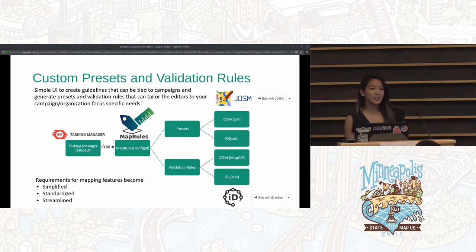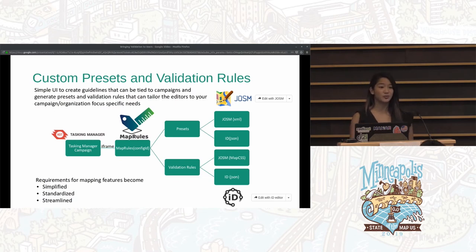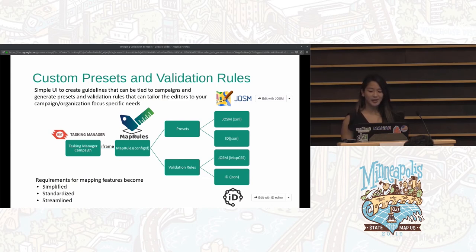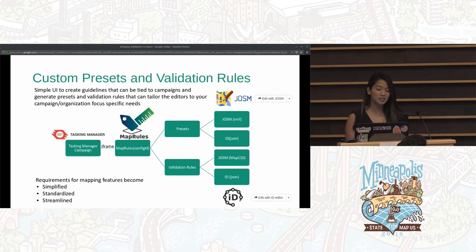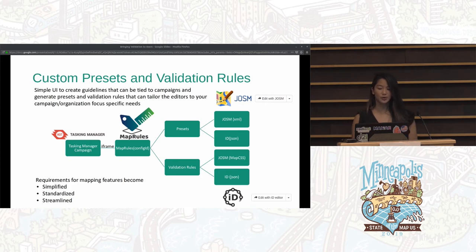All those validations are great for identifying issues the general public agrees upon, but we've seen time and again where people request new presets and validations or changes to existing ones for their specific needs. Oftentimes it turns into a debate about whether it should be included, since there are use cases in certain parts of the world where it's actually valid. So we made an application called MapRules that can be incorporated into Tasking Manager to create campaign-specific attribution guidelines which generate custom presets and validation rules, tailoring the editors to your campaign or organization-specific needs. This end-to-end communication helps enforce the requirements for mapping features in a simplified, standardized, and streamlined way.